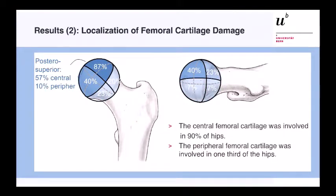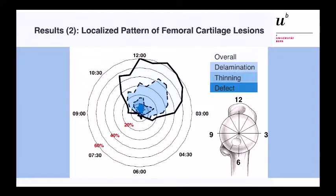Looking at cartilage damage, we found most damage over the avascular necrosis area — the anterior superior quadrant — followed by the posterior superior quadrant. The central femoral cartilage was involved in 90% of hips, whereas peripheral cartilage lesions were present in only one-third of hips, exactly consistent with what was seen during live surgery this morning. In terms of lesion type, delamination was most commonly observed in the anterior superior quadrant, with thinning in the minority of cases and full-thickness defects in very few.